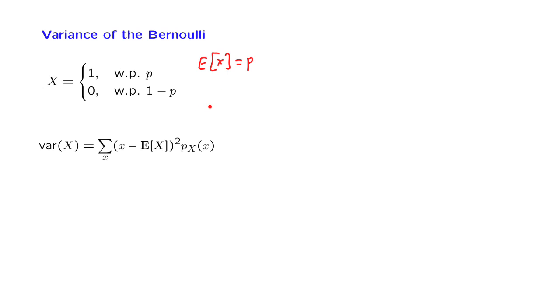One way of proceeding is to use the definition and then the expected value rule. So if we apply the expected value rule, we need a summation over all possible values of x. There are two values, x equals 1 or x equals 0. The contribution when x equals 1 is (1 minus P) squared times probability P. There's another contribution when x equals 0, which is (0 minus P) squared times the probability of 0, which is 1 minus P.